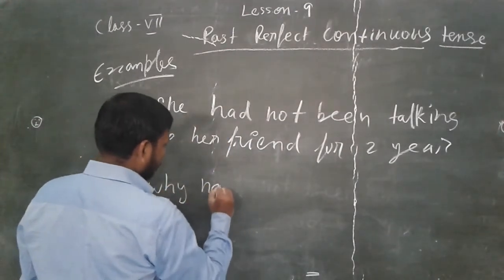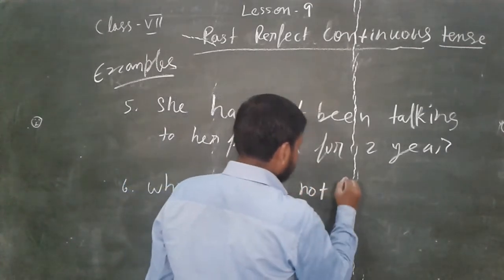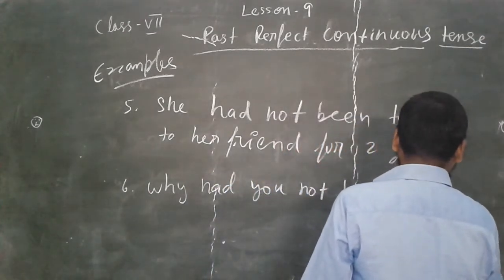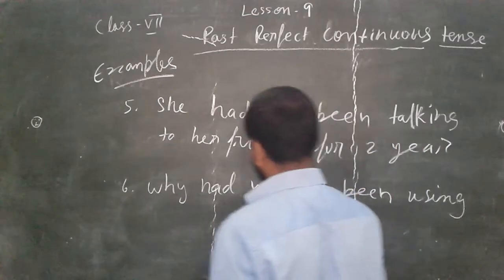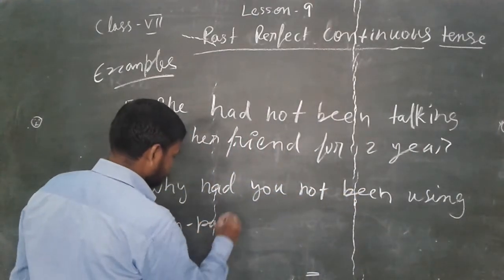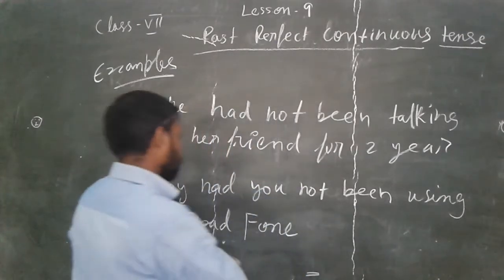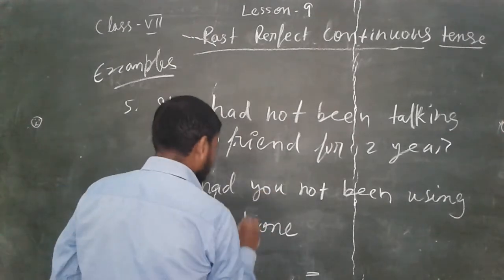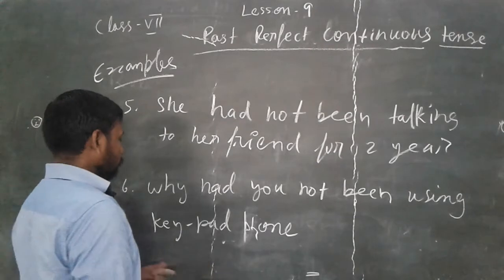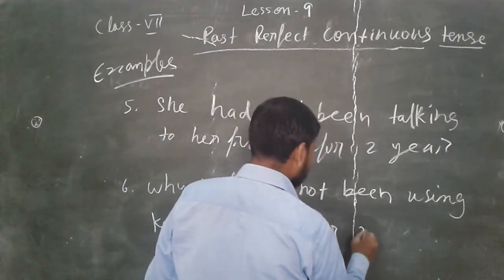Question example: 'Why had you not been using a keypad phone for two minutes?' You can write 'phone' as P-H-O-N-E. These are the different types of sentence patterns in past perfect continuous tense.